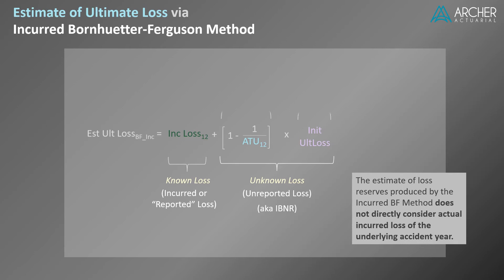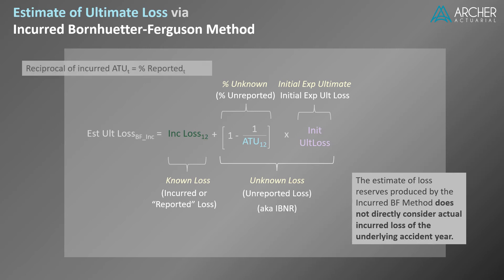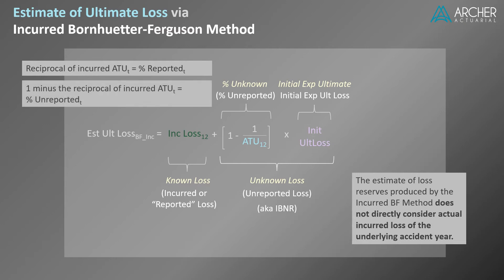Generally, the two terms in the unknown loss section can be described as the percent unknown and the initial expected ultimate. For the incurred version of this method, this equals the expected percent unreported times the initial expected ultimate loss. Note that the reciprocal of the incurred age-to-ultimate factor equals the percent reported. One minus this amount equals the percent unreported.